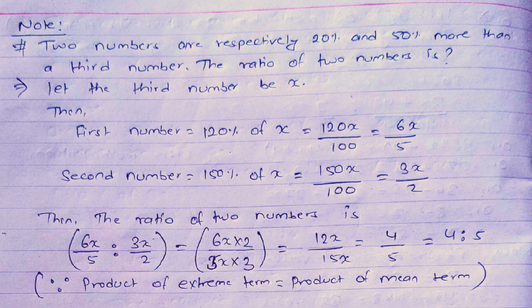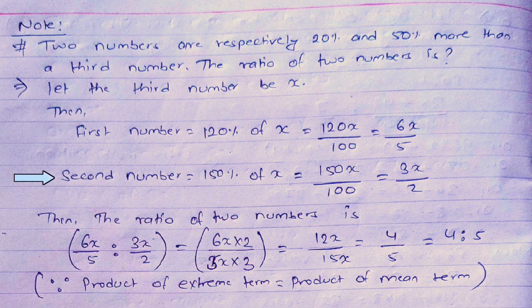Now let's go to a note which will be very helpful for the next question. The note: two numbers are respectively 20% and 50% more than a third number — what is the ratio of the two numbers? We suppose the third number to be x. The first number is 20% more than x, so it is 120% of x. Since 100 + 20 = 120, the first number = 120/100 × x = 6x/5.